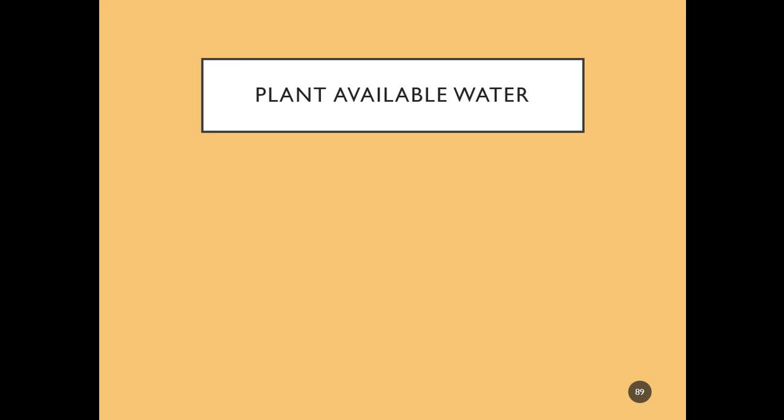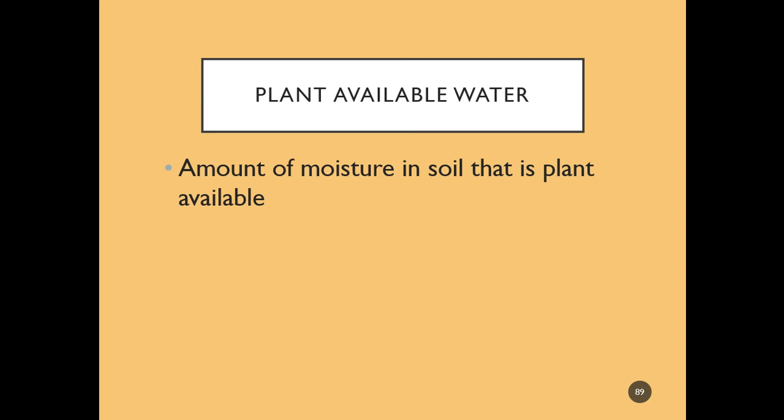Hi everyone, so this video will be on plant available water. If you remember, we touched on this when we were talking about macropores versus micropores and how there can be moisture in the soil that is not plant available. In this video we will try to tease some of that out. Plant available water is the amount of moisture in the soil that is plant available. What is it affected by though?